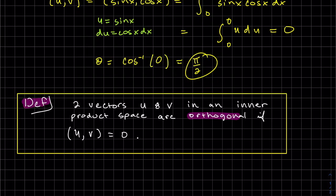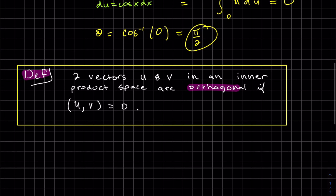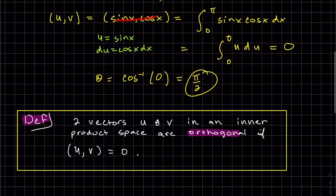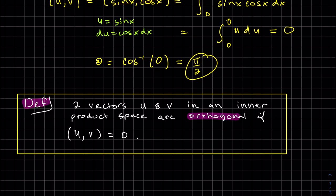This brings us to our next definition. Two vectors in an inner product space are orthogonal if the inner product is 0. So you can see here, we did get the inner product was 0. So the angle between sine of x and cosine of x is orthogonal.